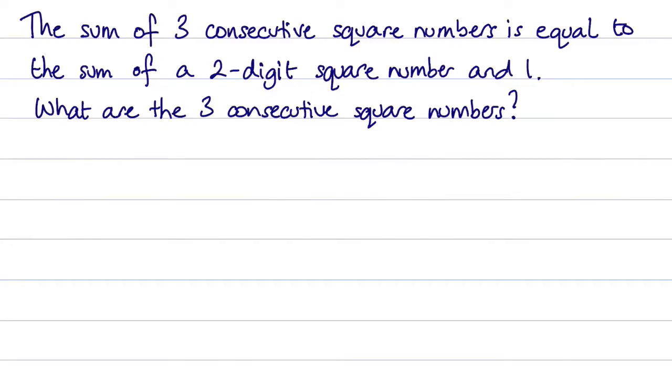In this question we're told that the sum of three consecutive square numbers is equal to the sum of a two-digit square number and one, and we have to find those three consecutive square numbers.